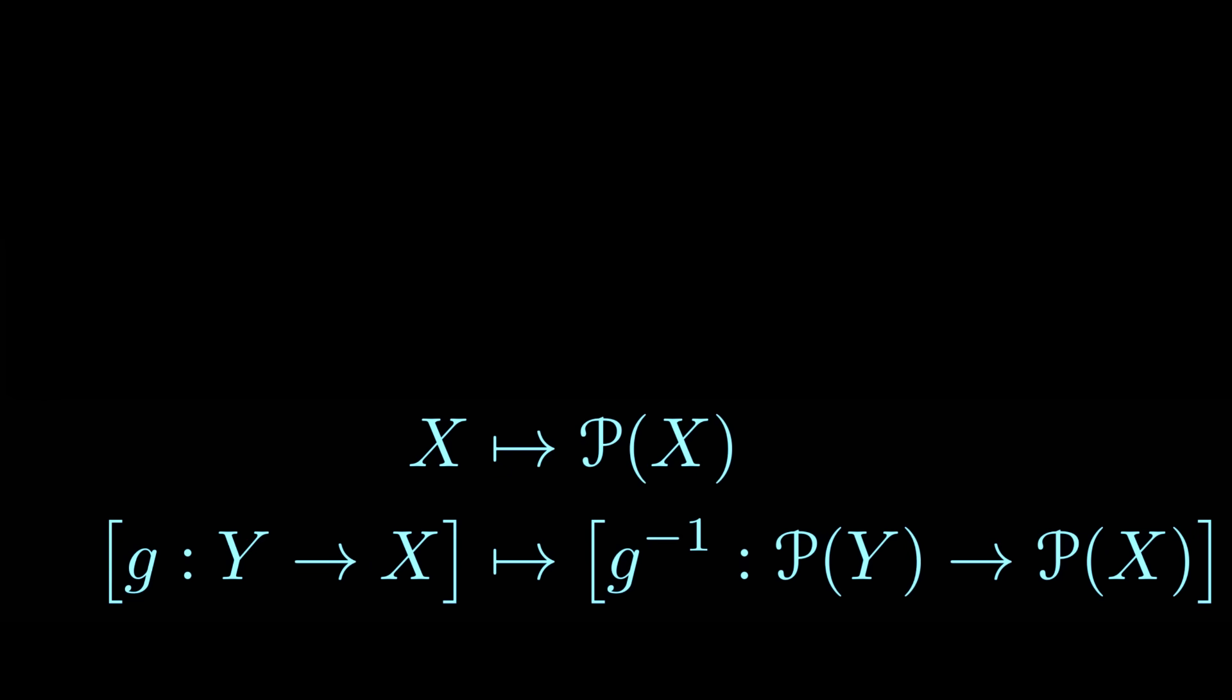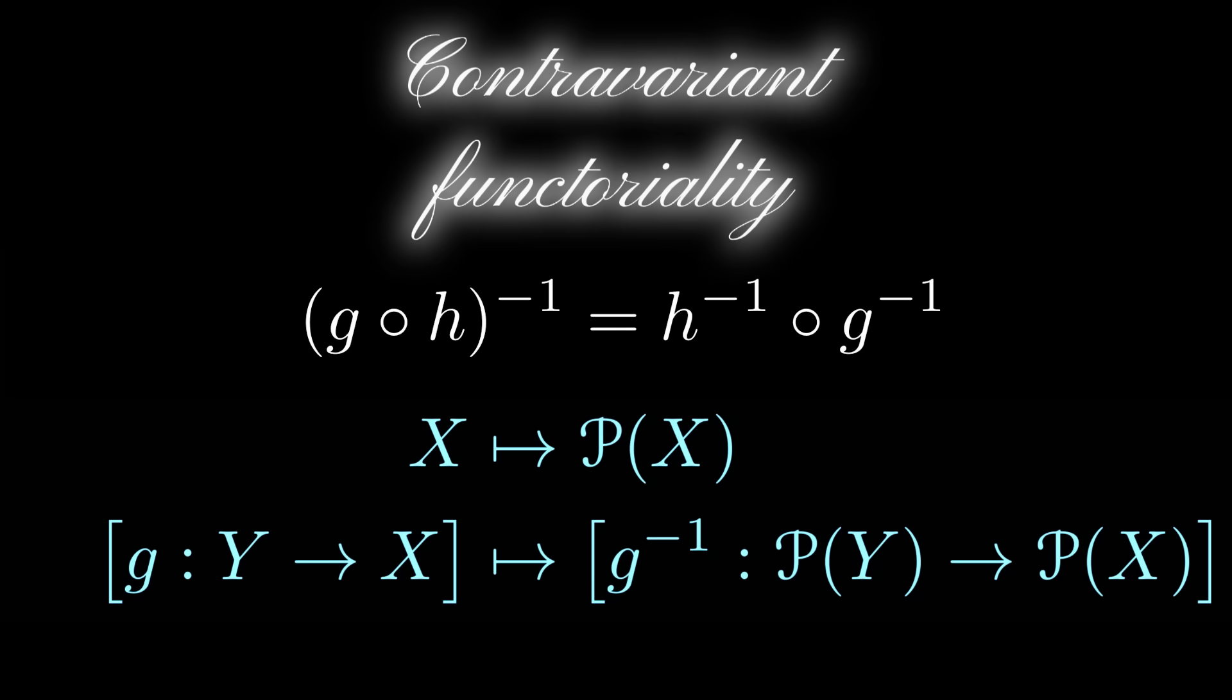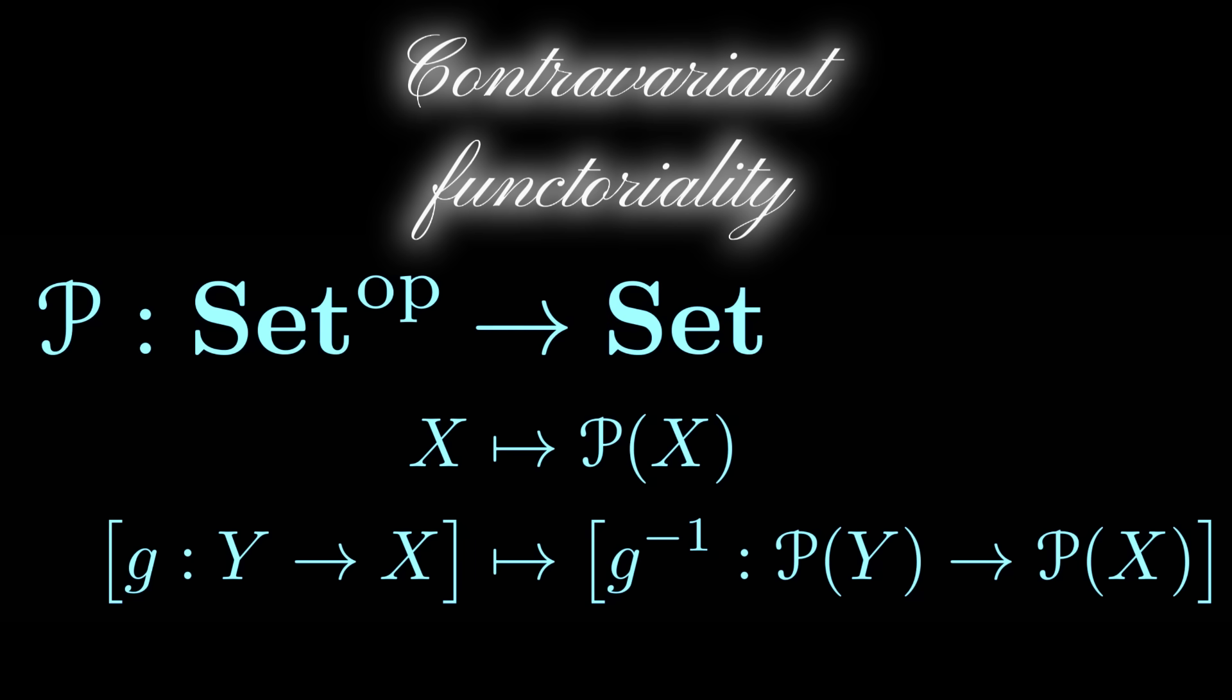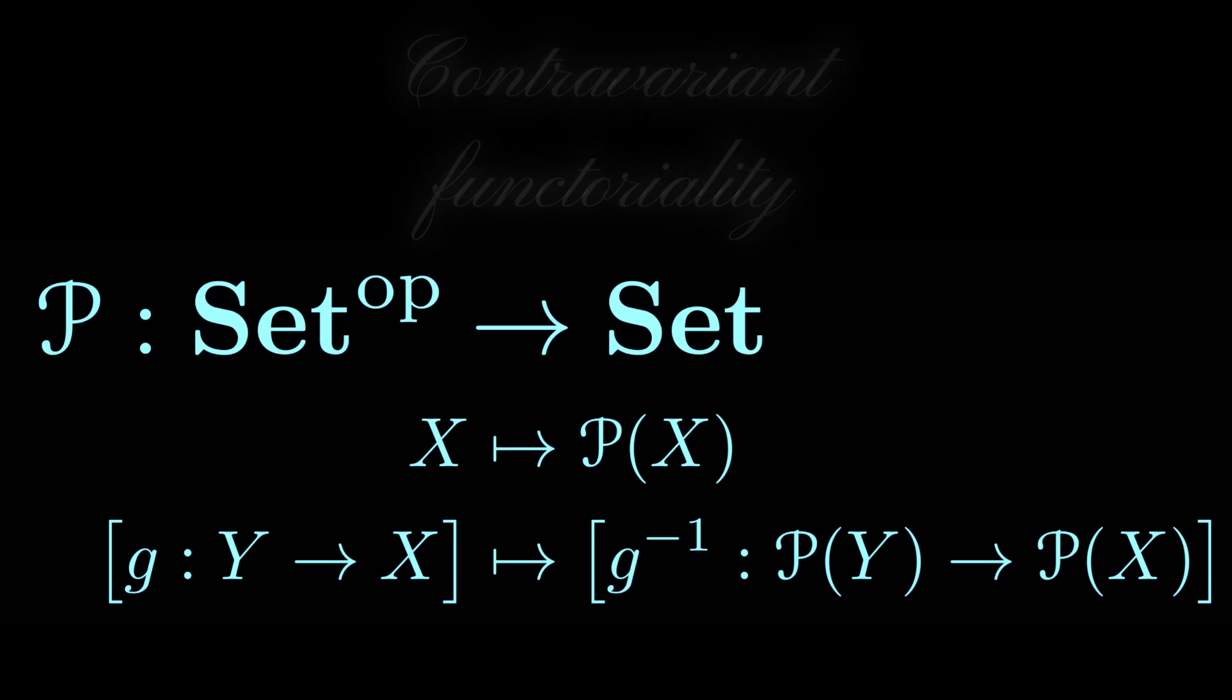With this, taking power sets reverses functions in a way that also reverses the function's compositions. This property of reversing the order of composition could be called contravariant functoriality, meaning that we have defined a functor from one category to the opposite of another. In our specific case, we have shown how to realize the construction of power sets as a functor